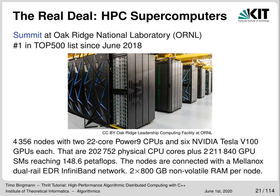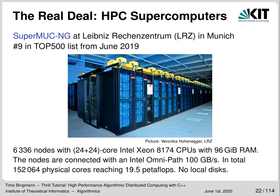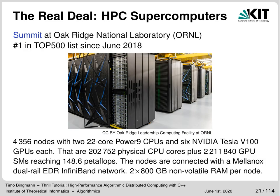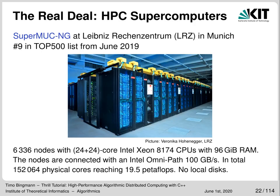The real deal on Summit is that these nodes also contain 6 NVIDIA GPUs, summing up to 2.2 million streaming multiprocessors, used for massive simulations in physics, chemistry and training neural networks. The biggest system in Germany is the SuperMUC-NG at the Leibniz Rechenzentrum in Munich — currently number 9 in the top 500 list — a more traditional supercomputer without GPU cards. It has 6,336 nodes and 24 physical Intel Xeon cores per node, connected with an Intel Omnipath network. Both Summit's Mellanox EDR InfiniBand and SuperMUC's Omnipath allow remote direct memory access, and notably both systems don't have local disks.